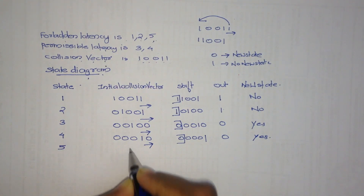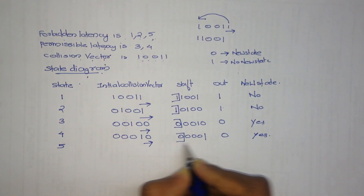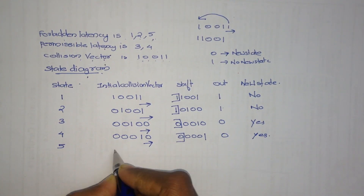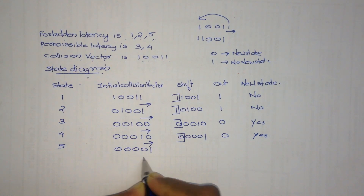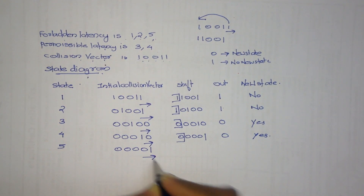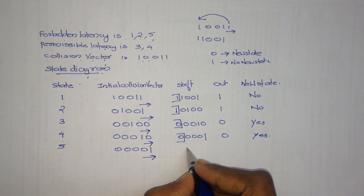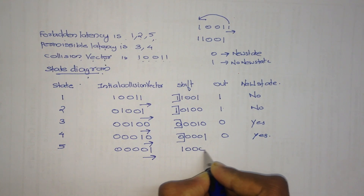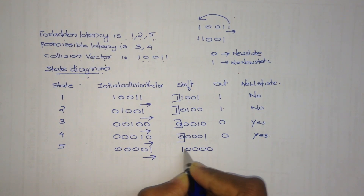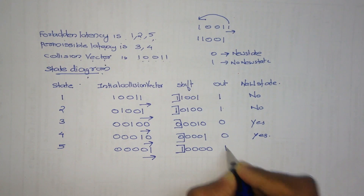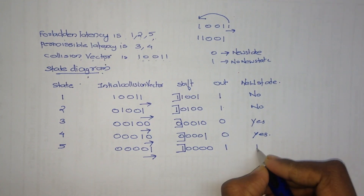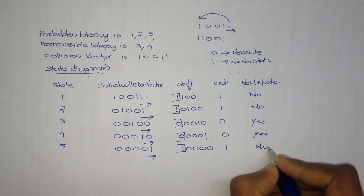At the fifth state, we write 0, 0, 0, 0, 1 and perform right shift. It becomes 1, 0, 0, 0, 0. Now we omit the first value, which is 1. Therefore no new state is formed.